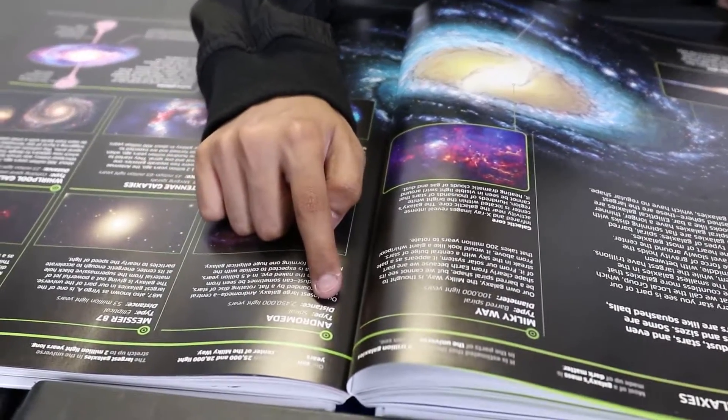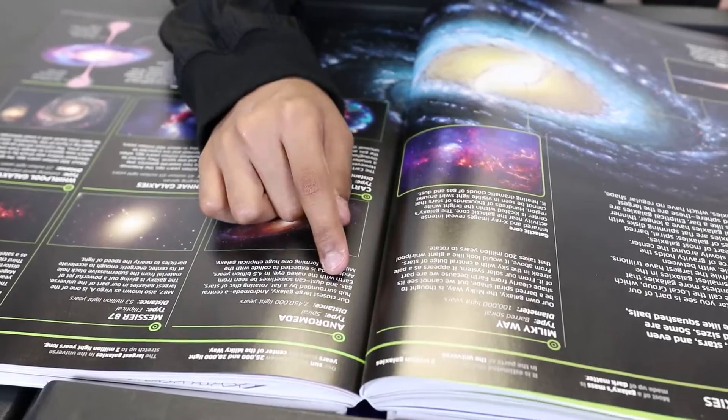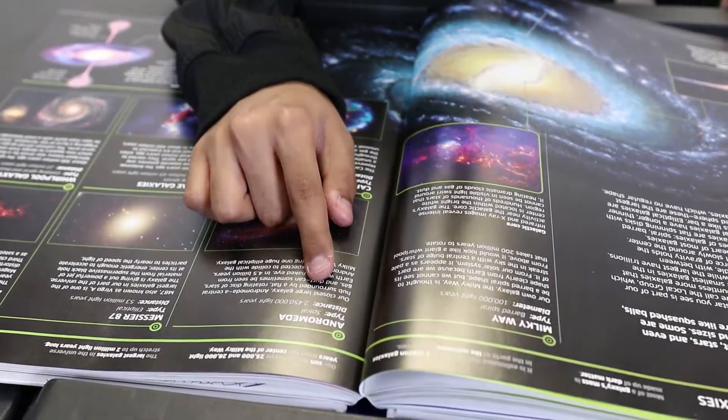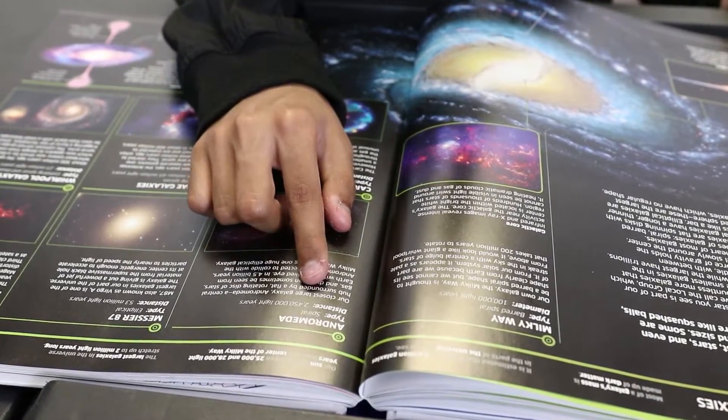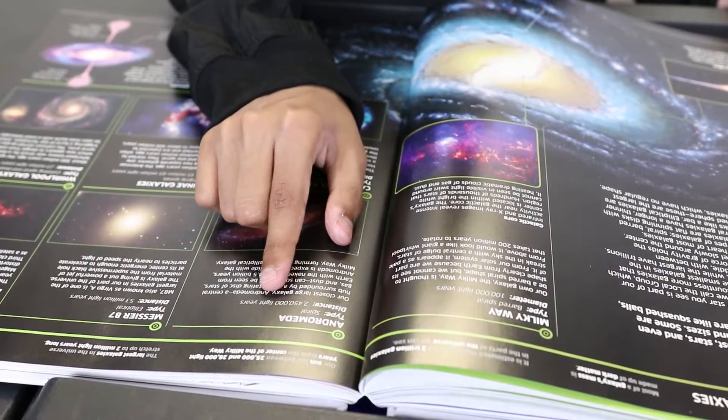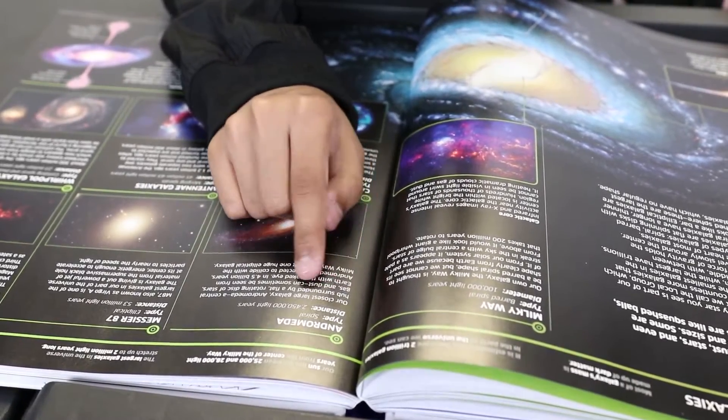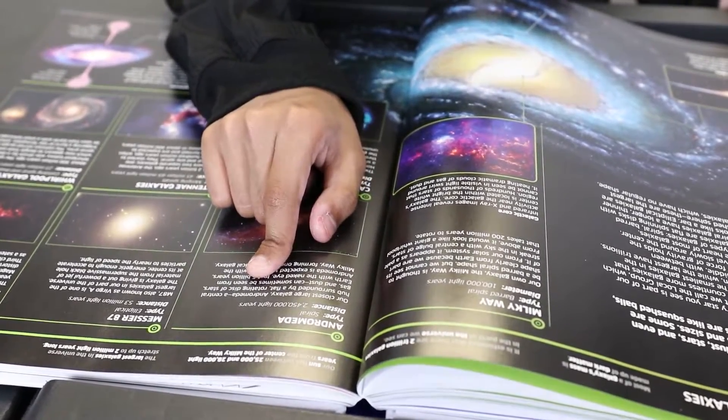And this is Andromeda. It's a type called spiral. And it's at a distance of 2.54 million light years away from us. Our closest large galaxy, Andromeda.